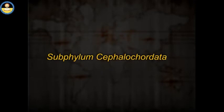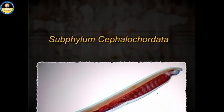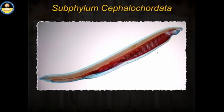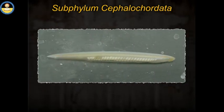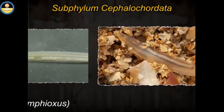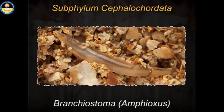Subphylum Cephalochordata. The cephalochordates are usually represented by one organism: Branchiostoma, commonly called Amphioxus.